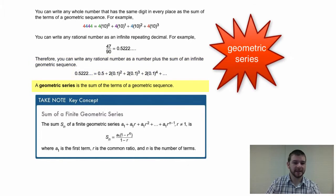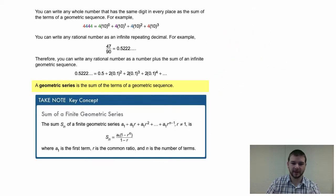A geometric series is the sum of the terms of a geometric sequence. For your notes, a key concept: the sum of a finite geometric series. The sum, S sub n, of a finite geometric series can be written a sub 1 plus a sub 1 times r, plus a sub 1 times r squared, plus etc., all the way through a sub 1 times r to the n minus 1.